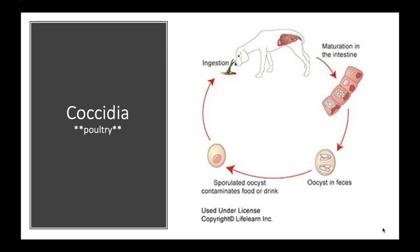Looking at coccidia: the life cycle involves ingestion through the environment, maturation in the intestine, finding oocysts in the feces, sporulated oocysts contaminating food or drink, and the cycle repeating. Many of these medications are widely used for poultry, because coccidia is a huge problem on chicken farms — it creates significant loss when chickens are constantly having diarrhea and losing fluids.